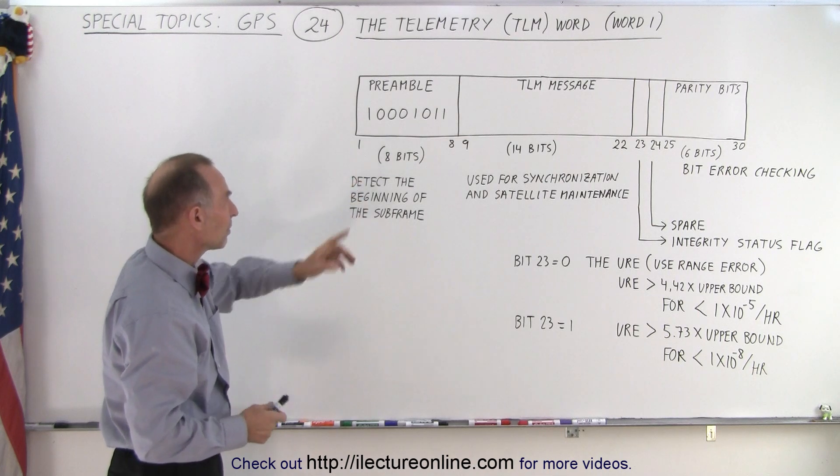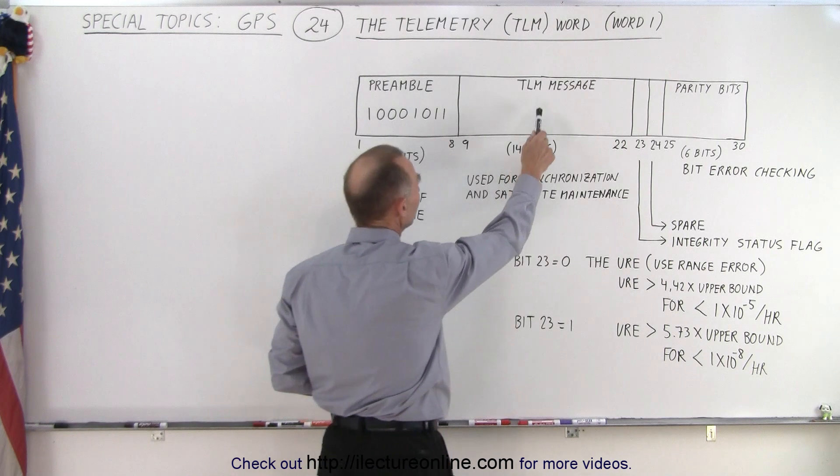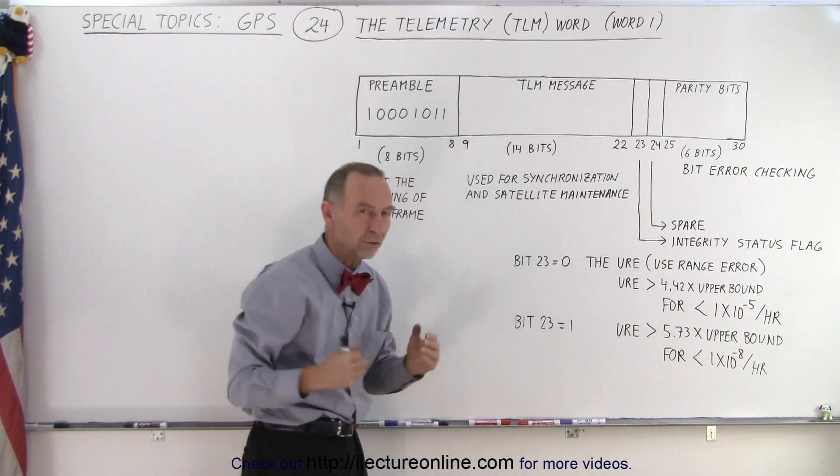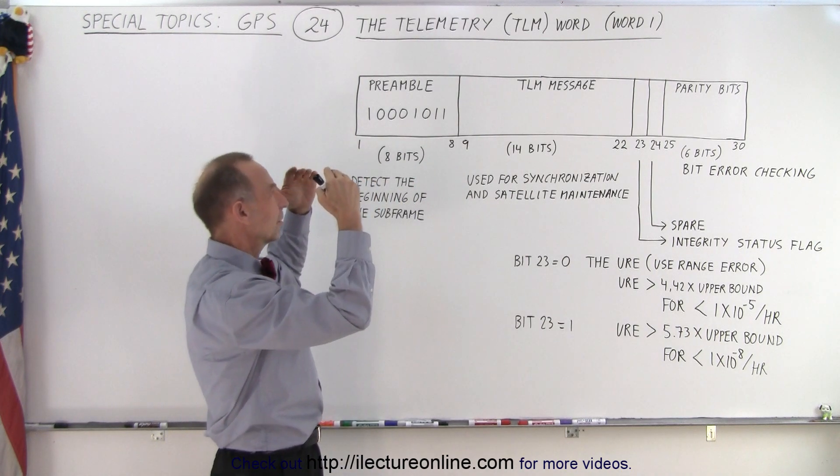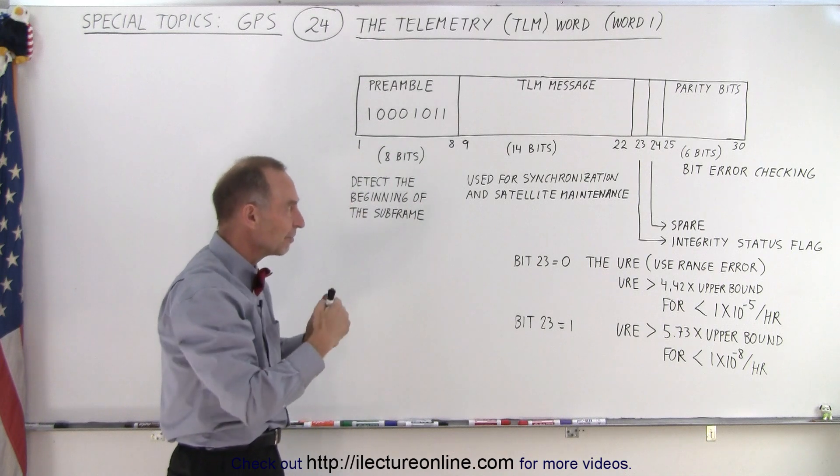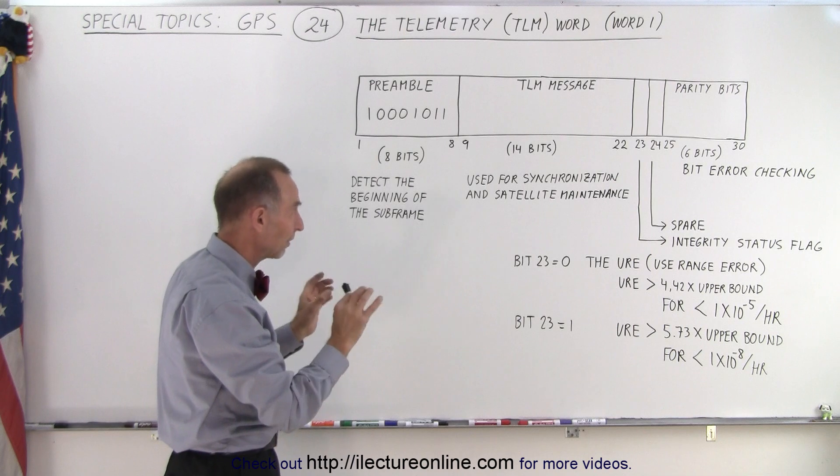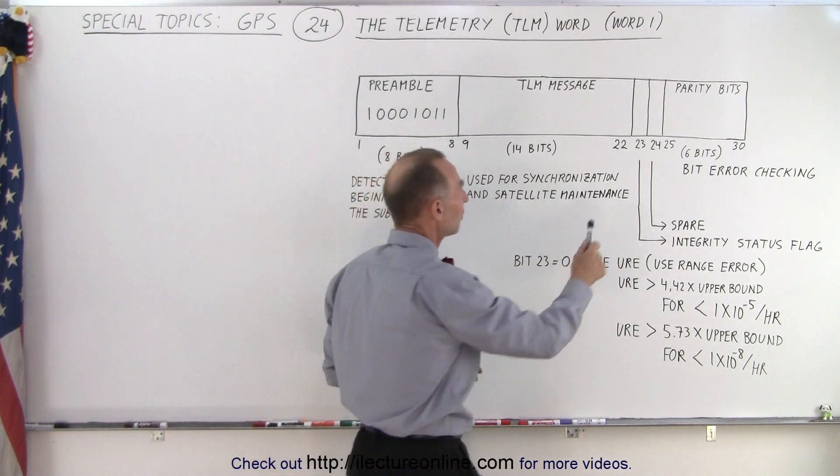So when it picks up those eight bits, it says that's the first eight bits. Then the next 14 bits are the TLM message, and they're used for synchronization and for satellite maintenance. To be able to sync up the timing of the satellite and the timing of the receiver, there needs to be some synchronization. The TLM message has that information. We'll have details of that in a later video. Then we have two single bits,